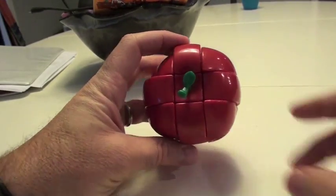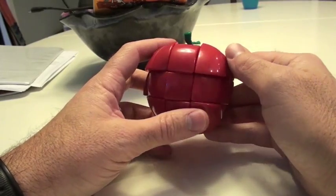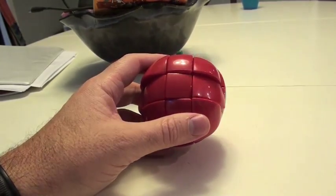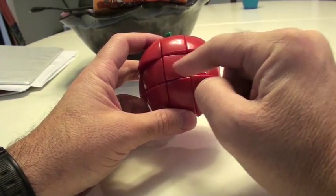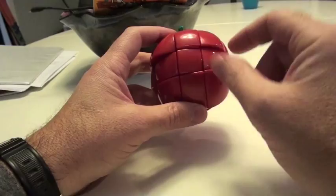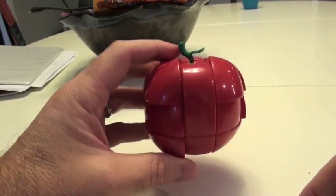So we can't really call this a cross yet because this doesn't have colors to help guide us. But what we need to do is we need to make sure that these centers are oriented correctly. Now, because it's a SuperCube, it's not the color being different that tells us the orientation is wrong, it's the shape.